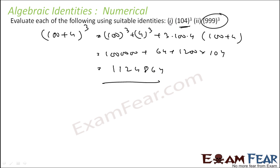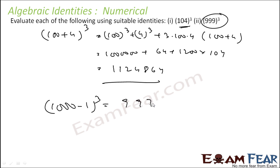Similarly, 999³ can be written as (1000 − 1)³, and you can use the same identity to solve it and get the answer. I won't solve this for you — you can try it on your own.